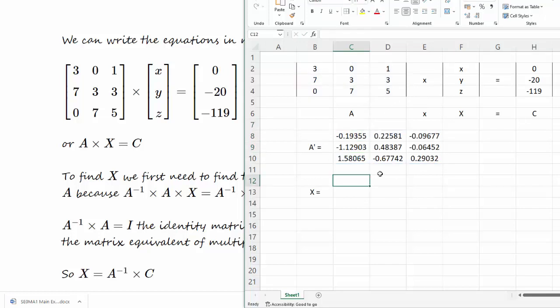So to find the X matrix we're going to use a function called MMULT. We're going to mark the inverse of A, comma, the C matrix, equals. Let's make these look a little bit more like matrices.